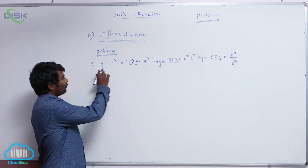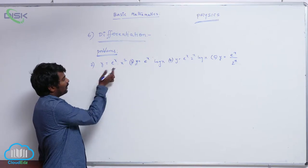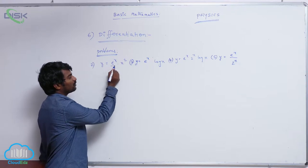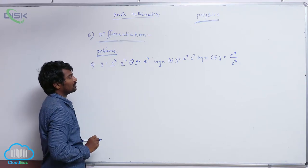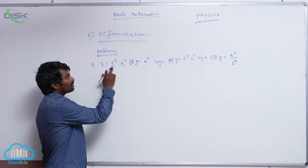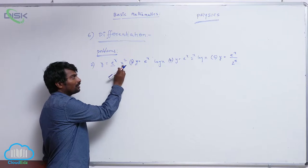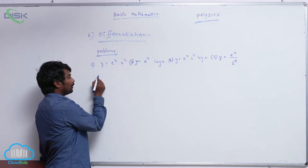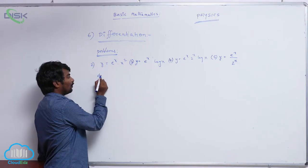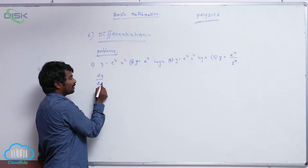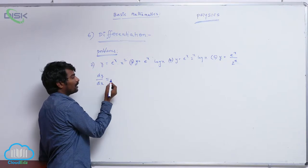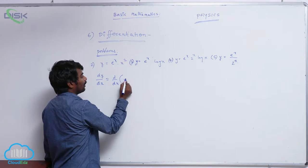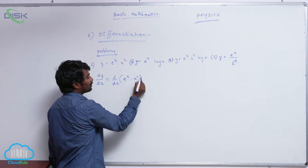Let us see one more problem: y is equal to e power x into x square. Here e power x is one function and x square is another function. It is like y equals f of x into g of x, so dy by dx is equal to d by dx of e power x into x square.